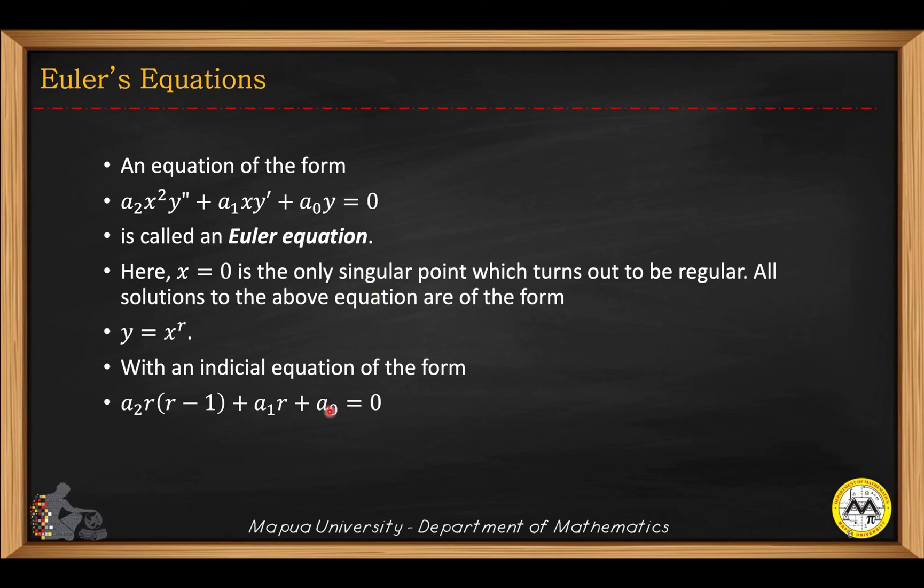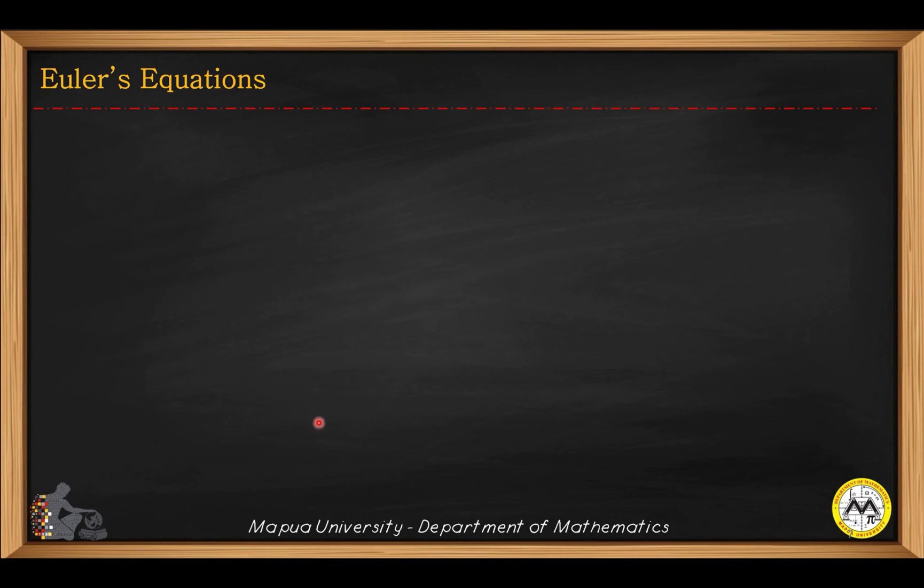This results into a quadratic equation if we substitute the constants a sub 2, a sub 1, and a sub 0, and we get two values for r. If the values of r are distinct, then this is how you will write your solution for the Euler equation.